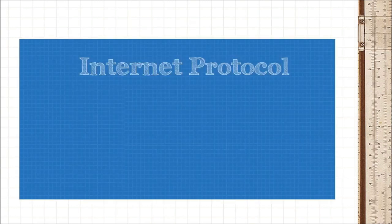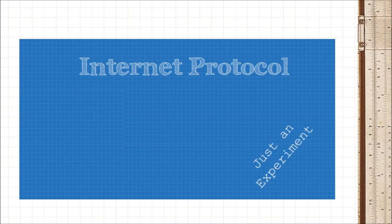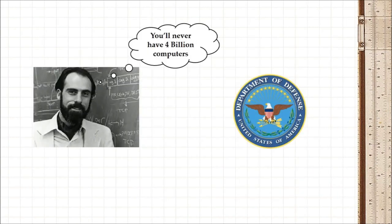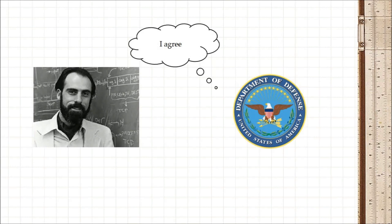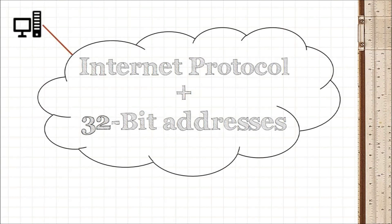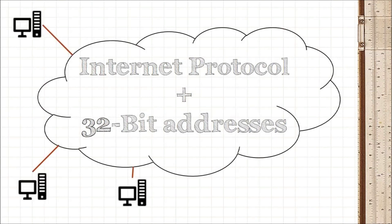Now in his defense, they were designing the Internet Protocol as an experiment for the U.S. Department of Defense. Vincent thought that even the well-resourced U.S. Department of Defense would never be able to create 4 billion computers on their own. But what Vincent didn't realize was that IP and its 32-bit addressing space took off and became the default protocol for nearly every network on the planet, including the biggest network of them all, the Internet.